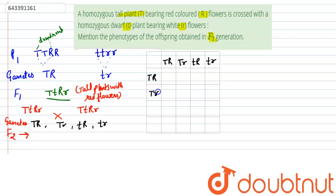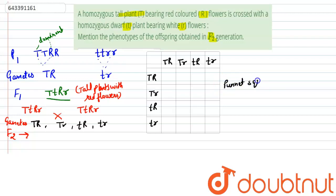These are the gametes and the combinations of gametes that are possible. The progenies we will observe can be worked out using this Punnett square. So this is the Punnett square, and these are the gametes.